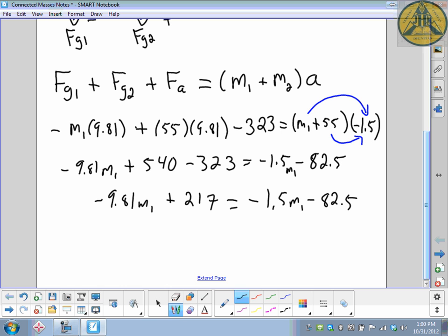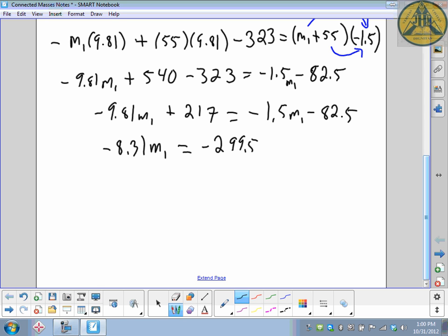Get all my m1's on the left, the numbers on the right. This would be negative 8.31 times my counter mass equals negative 299.5. Divide both sides by negative 8.31, and your mass comes out to be 36 kilograms.